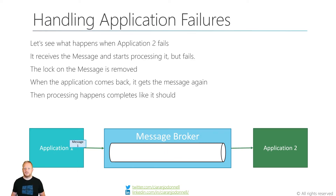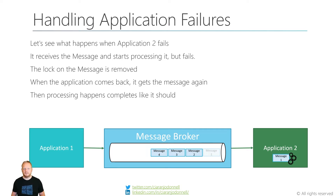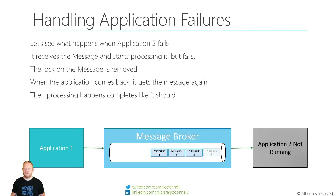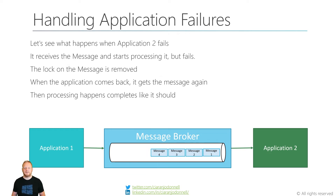If we see what happens when application two fails - it starts processing messages, they're coming into the message broker and getting delivered to application two, it's processing them but then it fails. That lock that prevents other receivers from receiving the message gets removed because the message broker notices that either the network connection has failed or a timeout has expired for application two processing the message. It releases that lock, and when application two comes back to life it connects back to the message broker and is able to download that message again. This time it gets to process it, complete that processing and acknowledge it from the front of the queue.